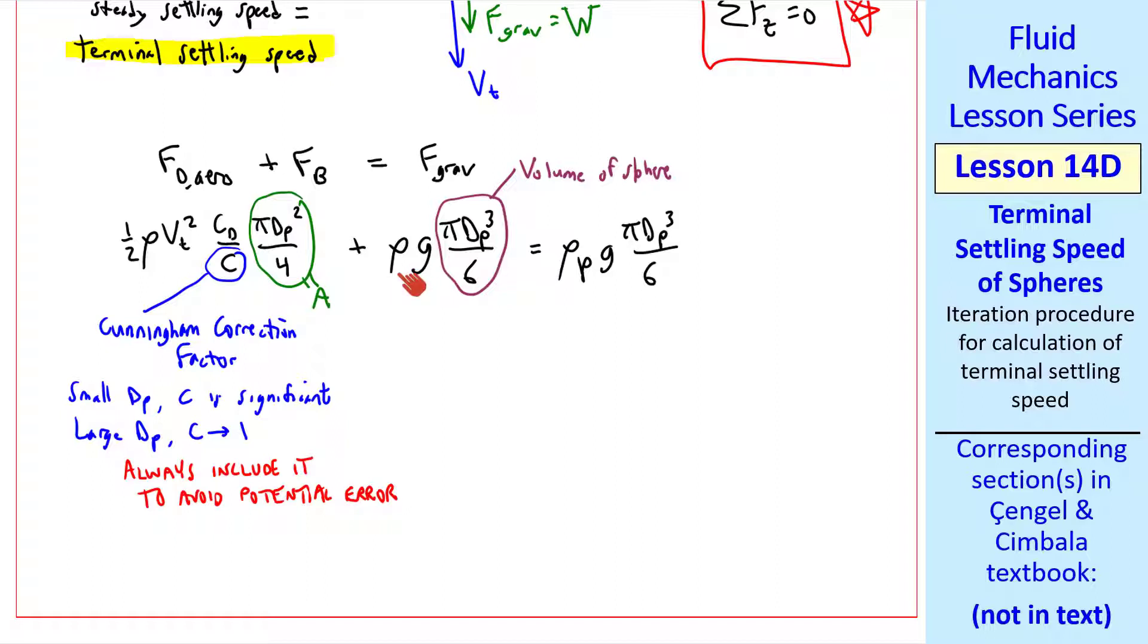In my notation, properties with a subscript p are for the particle, and properties with no subscript are for the surrounding fluid, which in this case is air. But these equations are valid for any fluid. We see that pi cancels out in each term, and dp squared cancels with two of these dp's. We can combine these two terms together. After a little bit of algebra, we can solve for vt. vt is the square root of 4/3 times (rho p minus rho) over rho, g dp, and c over cd.